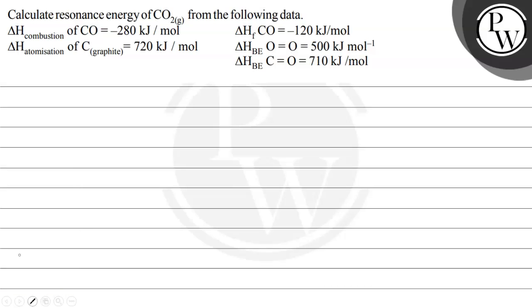Let's read this question. The question says: calculate the resonance energy of carbon dioxide gas from the following data — delta H combustion for CO, delta H atomization for carbon in graphite form, delta H formation for carbon monoxide, bond enthalpy of O=O, and bond enthalpy of C=O.